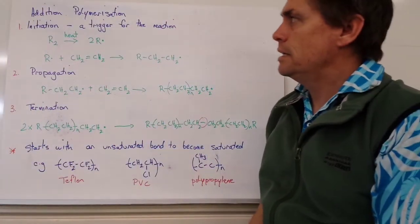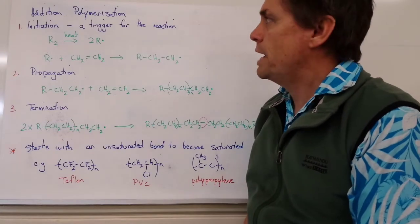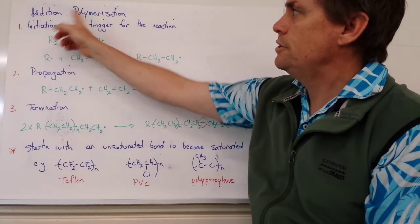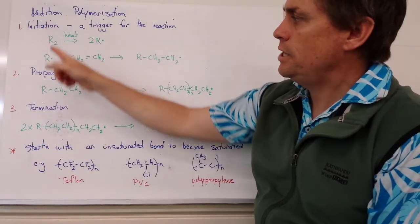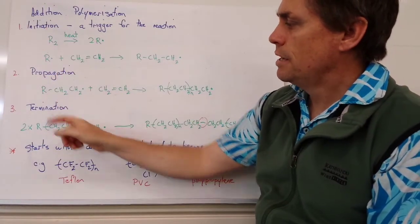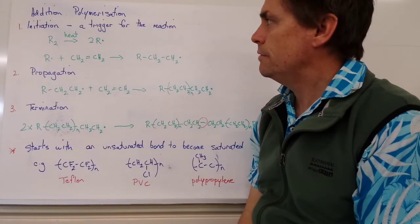So let's look a bit more in detail at the first of those types of reactions. So we're looking at our addition polymerization. And it has three steps. It has an initiation, a propagation, and a termination step involved in the process.